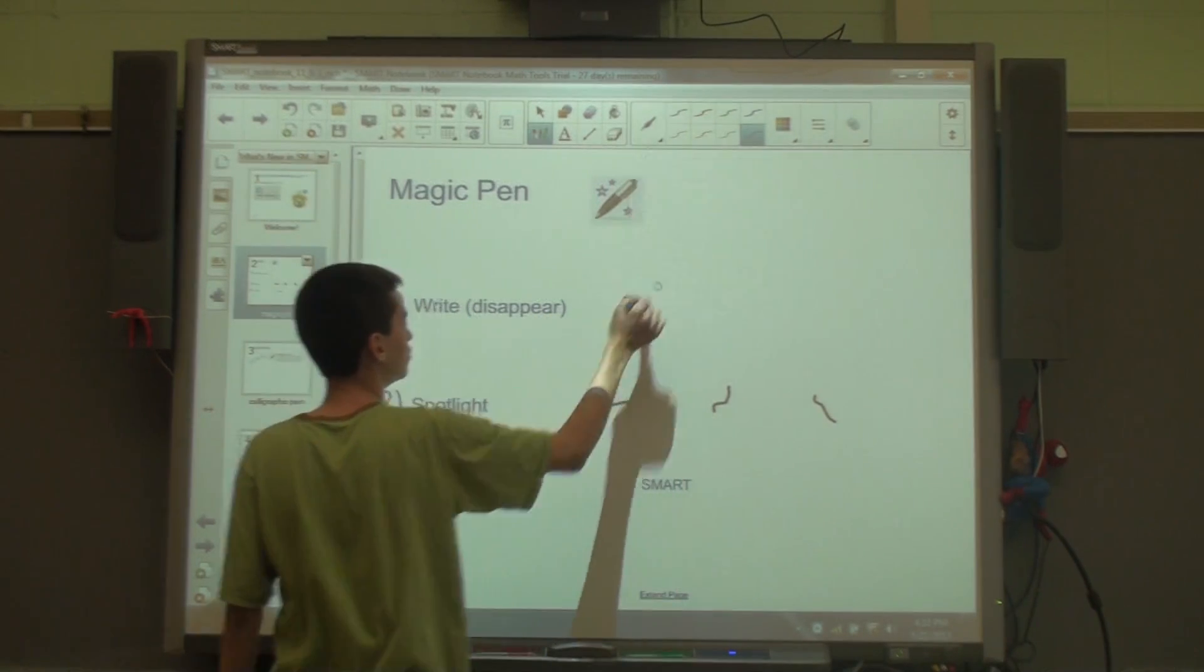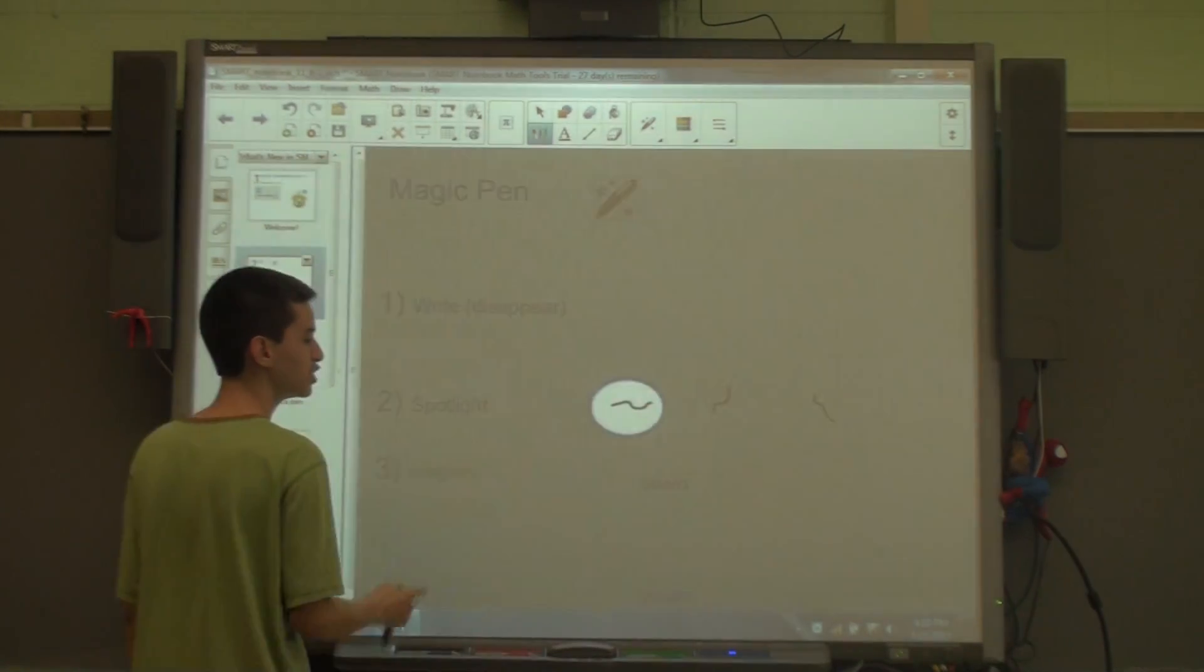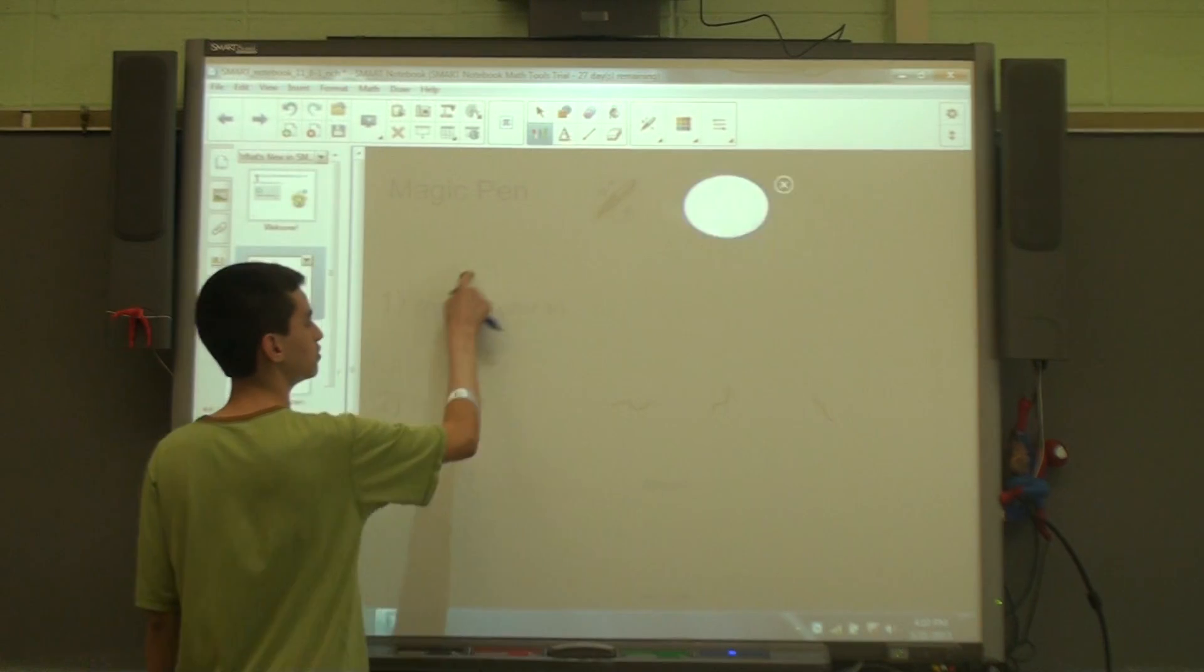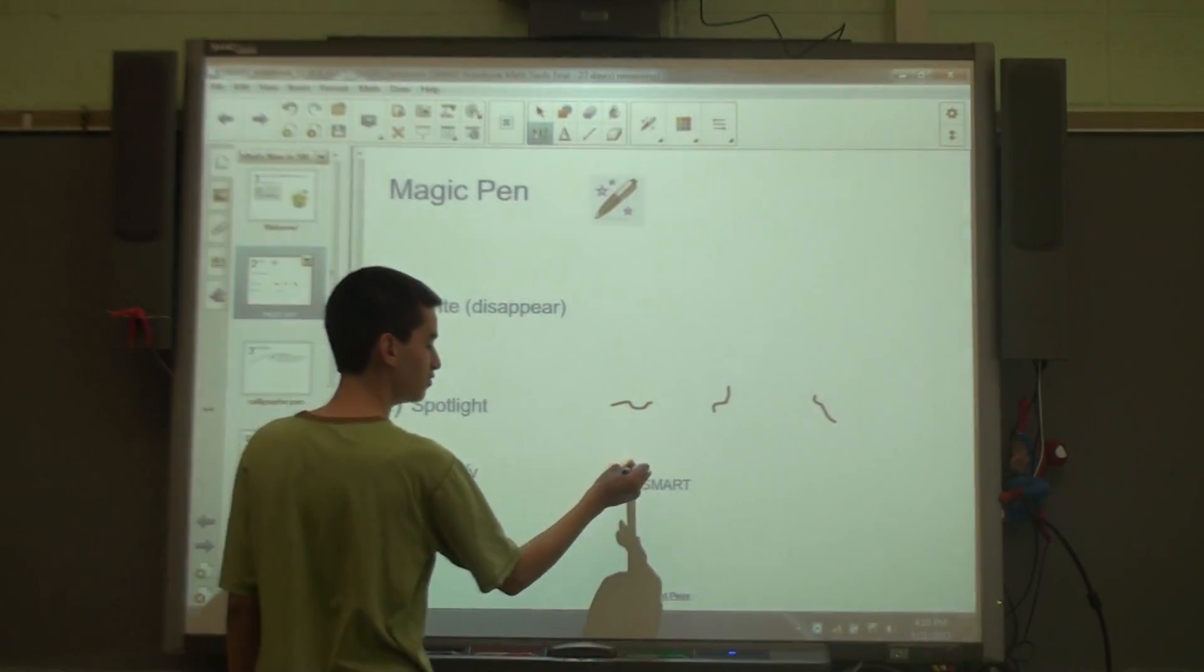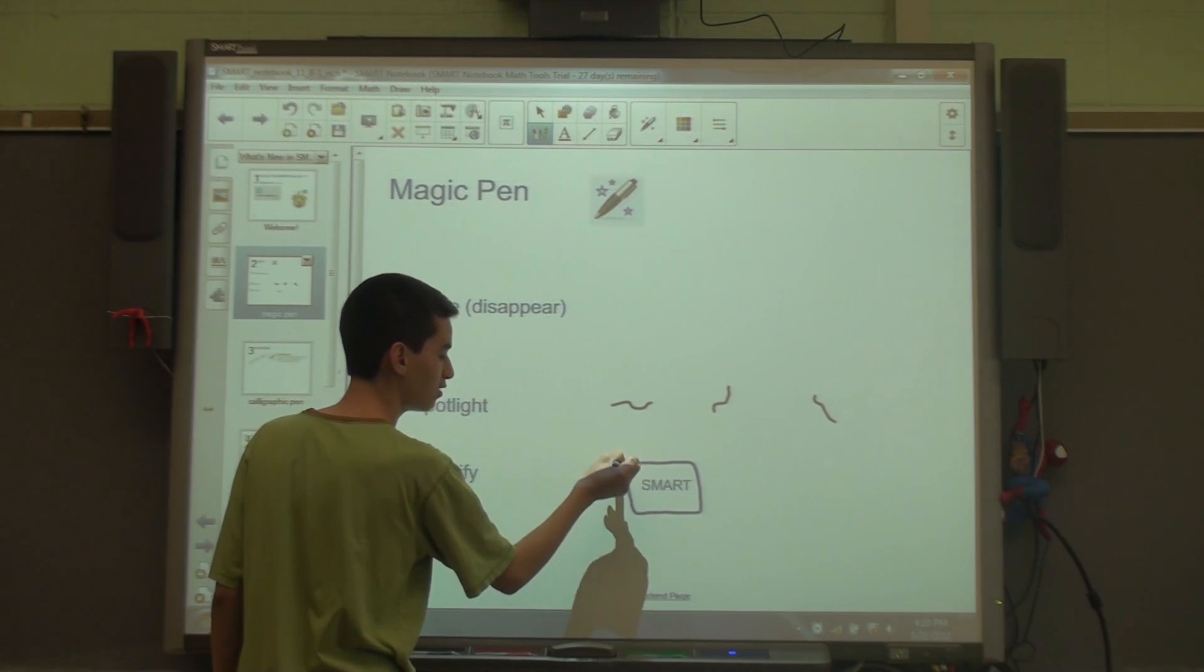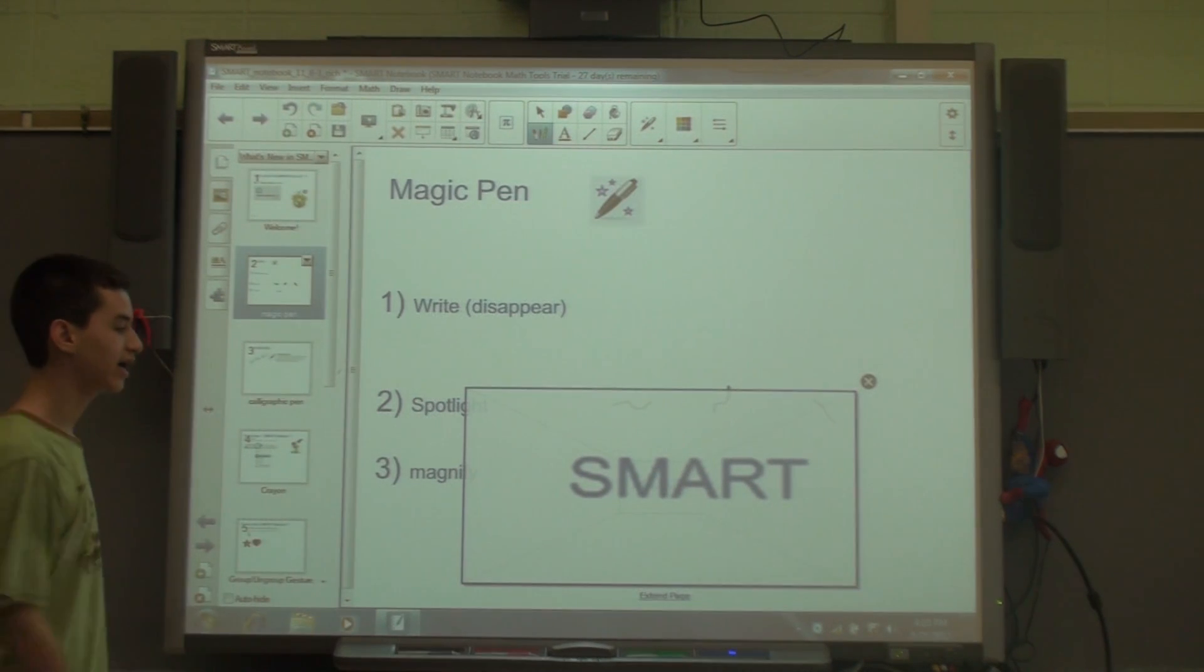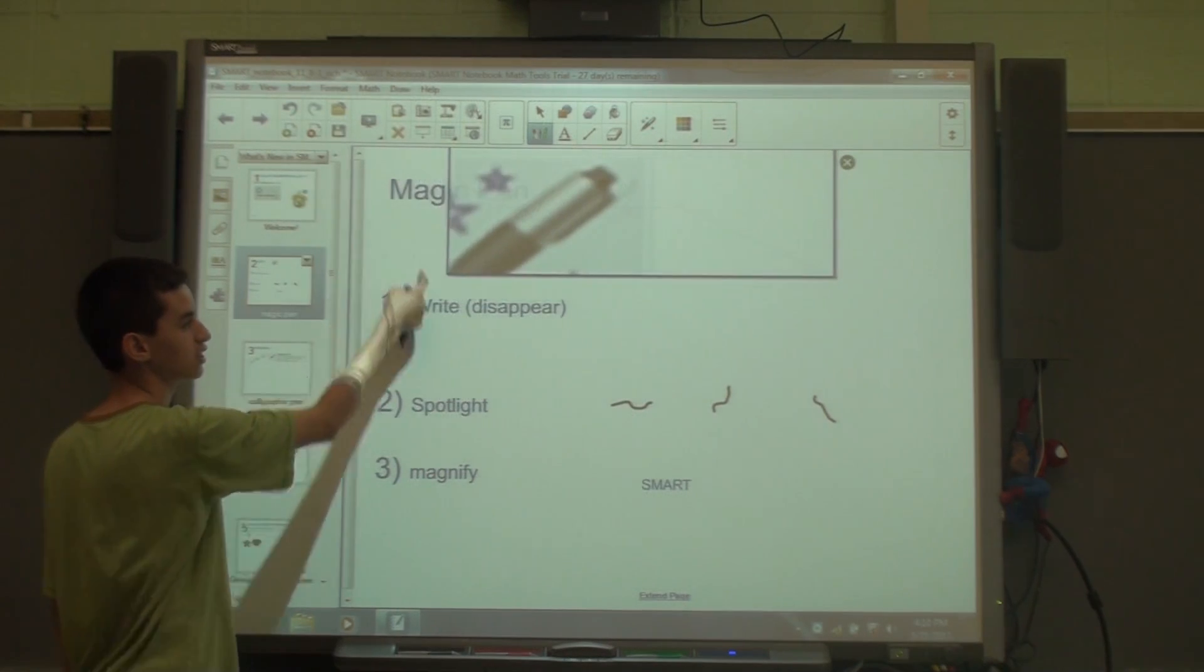The next thing you can do with the magic pen is make a circle around an object. It will form a spotlight so you can make your audience focus on a certain specific thing. Next, if you make a rectangle or a square, it will magnify and you're able to zoom in on something.